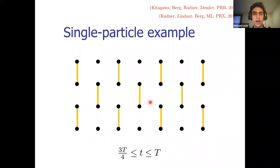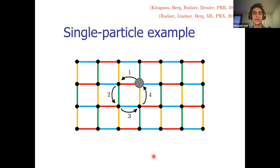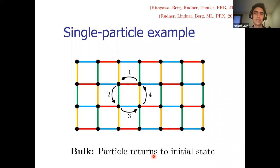When we put all four steps together, if we follow a particle starting at some lattice site, it moves along the red bond, then the green bond, then the blue bond, then the orange bond, completing a full circle and returning to where it started. So in the bulk, no matter where the particle starts, after one full period it comes back to its starting site. The bulk dynamics is completely trivial — it's just the identity.